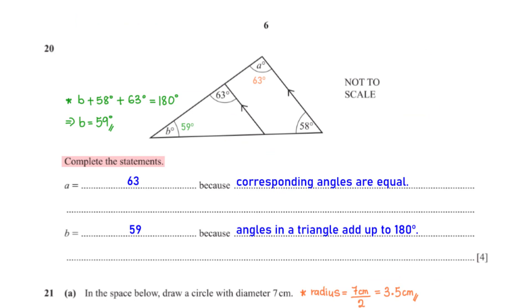Complete the statements. A equals blank because blank. These two are corresponding angles. Corresponding angles are equal, so A is 63. B equals blank because blank. The sum of the angles in this triangle must add up to 180 degrees. So we have B plus 58 plus 63 equals 180. When we make B the subject, we get B equals 59 degrees.